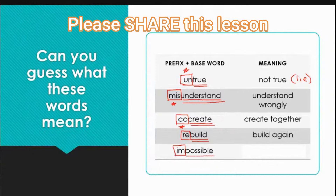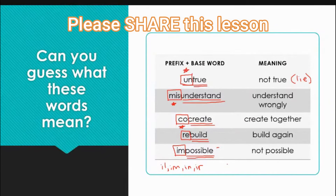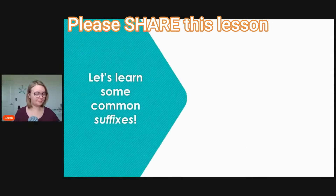Our last example is 'impossible.' We have our prefix 'im' and our base word 'possible.' When we're looking at base words, we can have any kind: an adjective, a noun, a verb. Impossible means not possible. Remember 'il,' 'im,' 'in,' and 'ir' mean not. So these are some great examples of words we might see with prefixes.